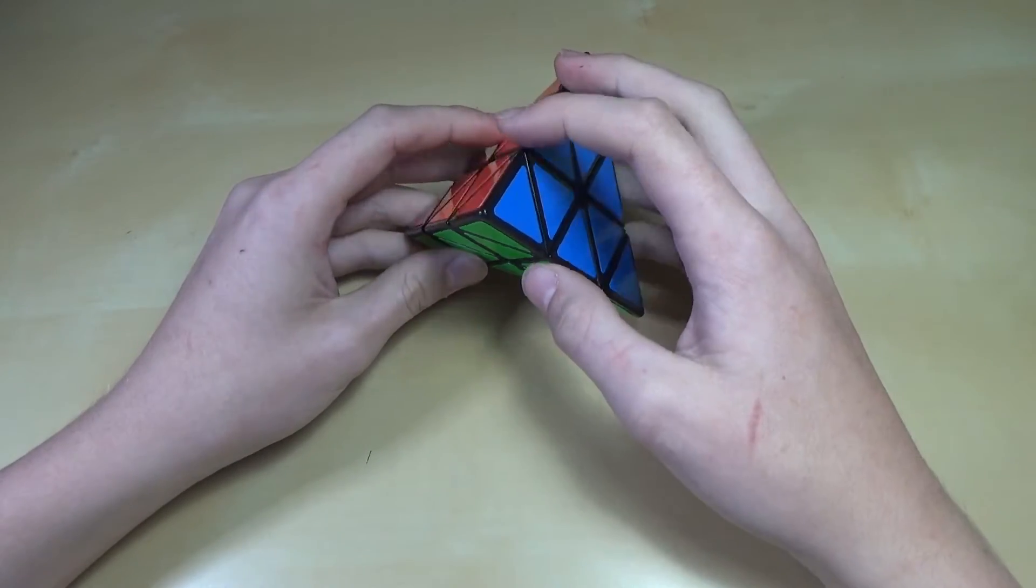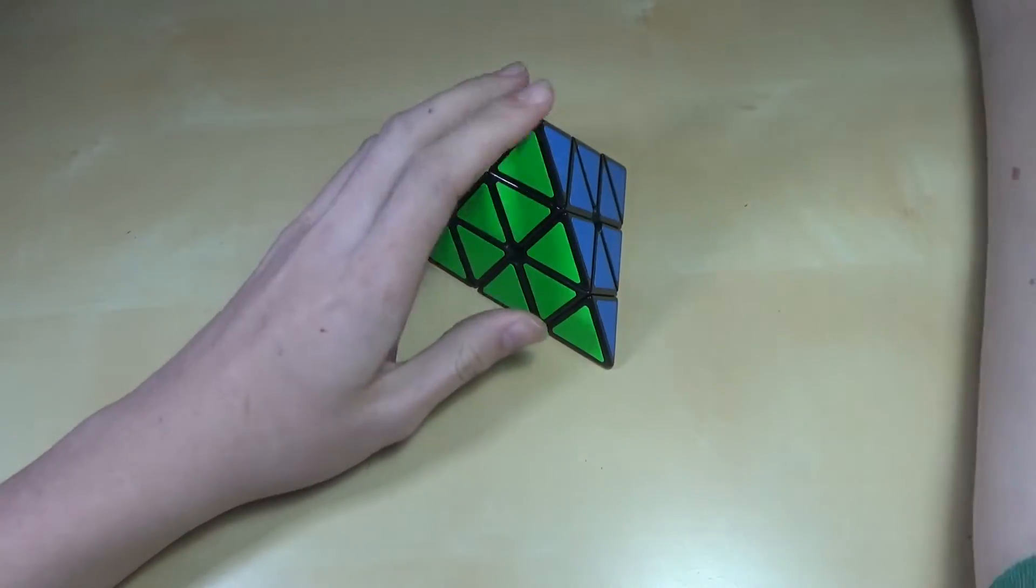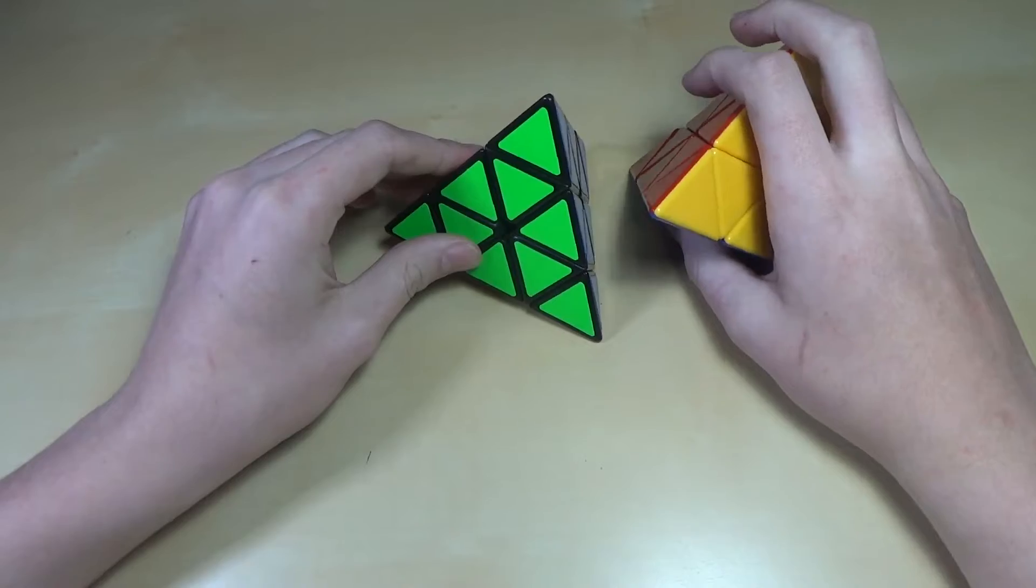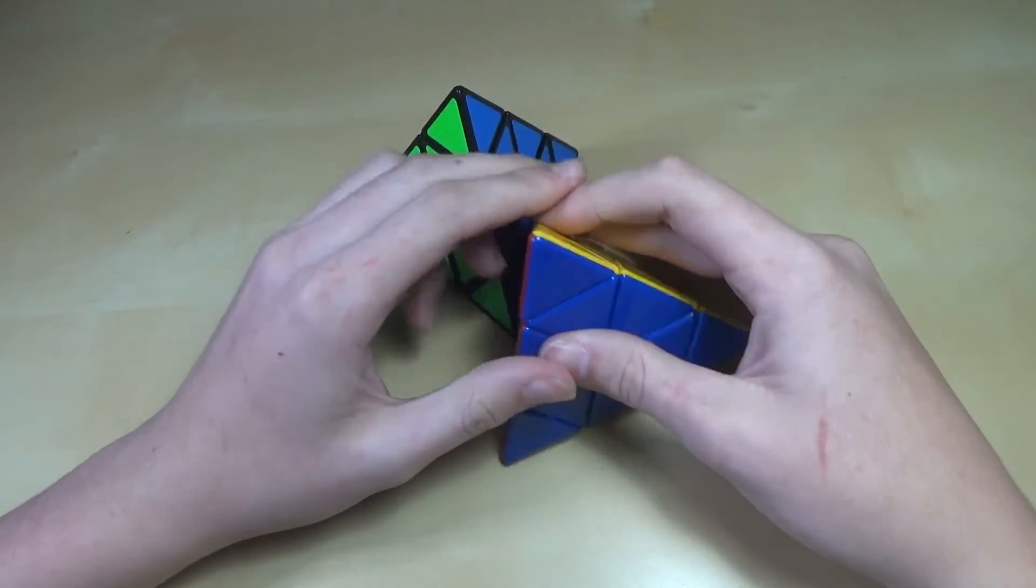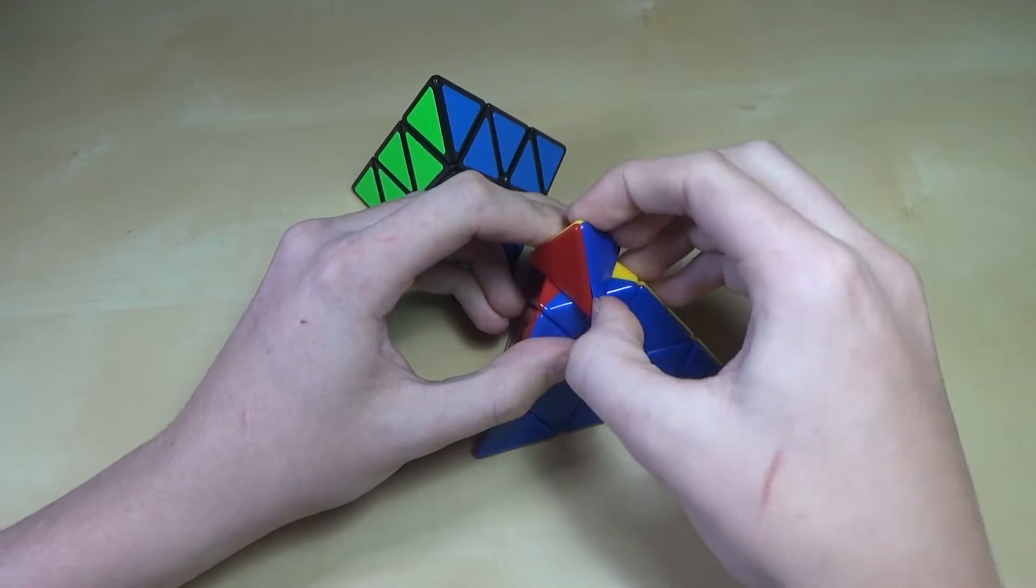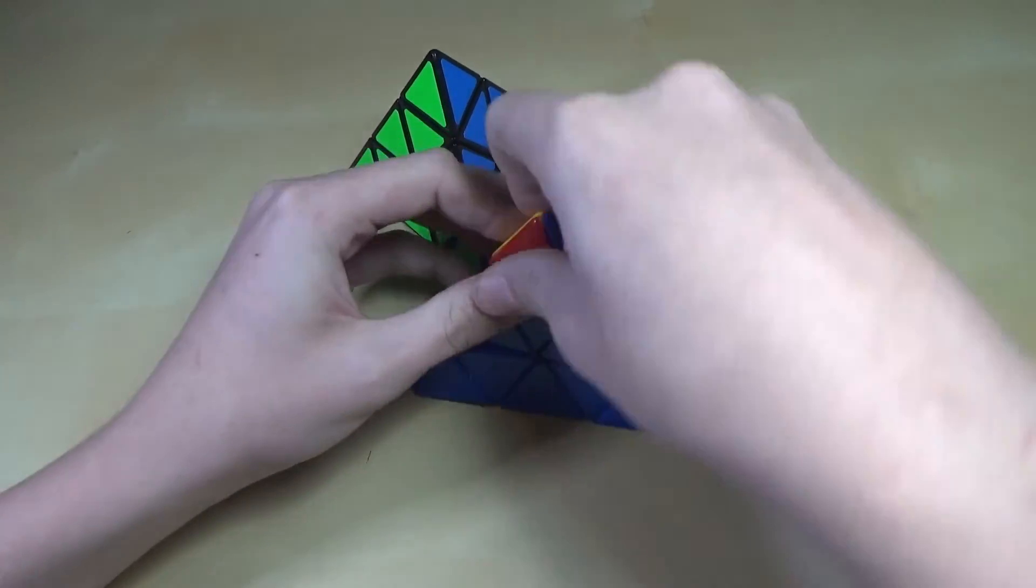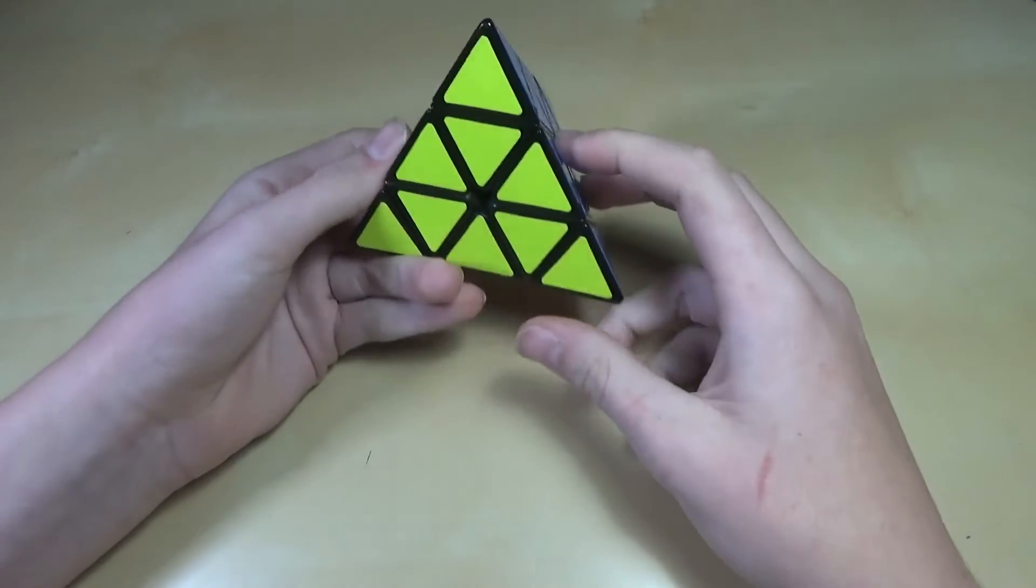And so the next pattern, you don't actually have to take any of the tips off, so you can do it on any Pyraminx that you want to, and it'll be equally fine. And the last pattern, you can do it on this one too, it would just take a long time to take all the tips off because they come off in three pieces. So we'll just do it on this one for the sake of simplicity.